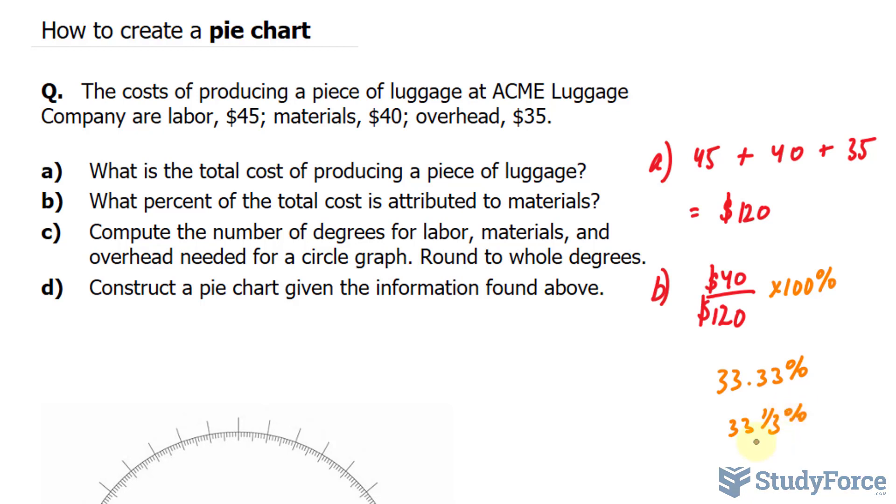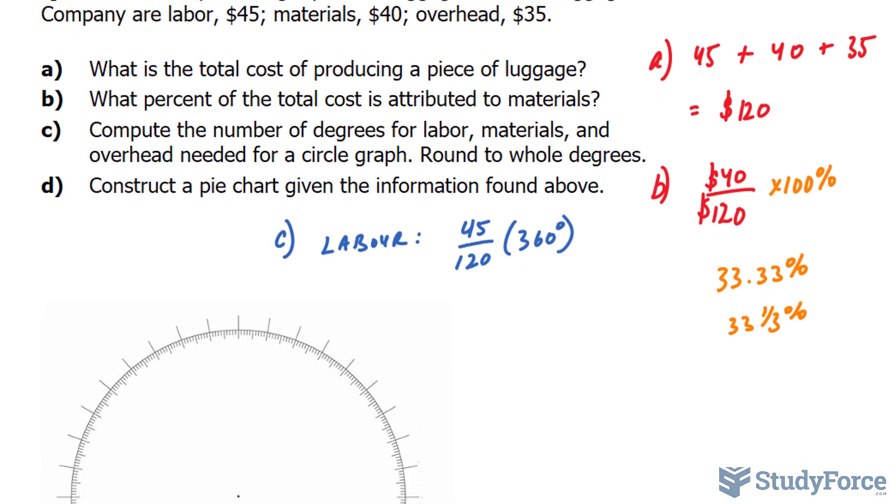Next, compute the number of degrees for labor, materials, and overhead needed for a circle graph. Round to the nearest whole degree. This information is important because it actually leads to our pie chart. We'll start with labor. We were told in the question that labor is $45. So I'll take 45 divided by 120 and multiply it by 360, because that's how many degrees are in one circle.